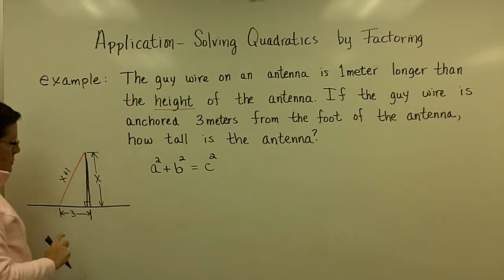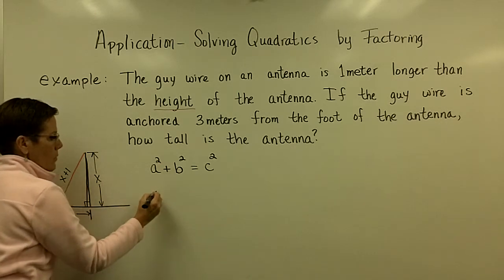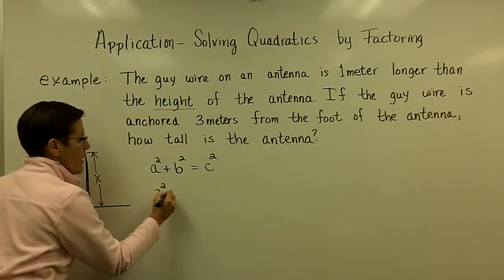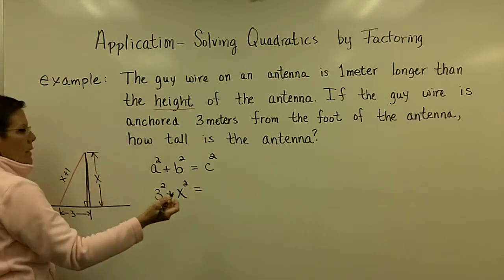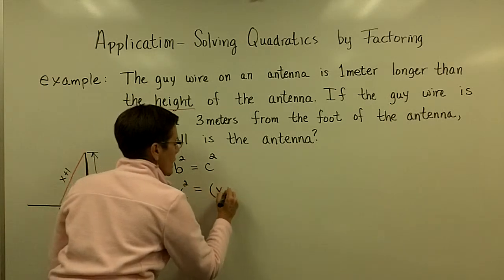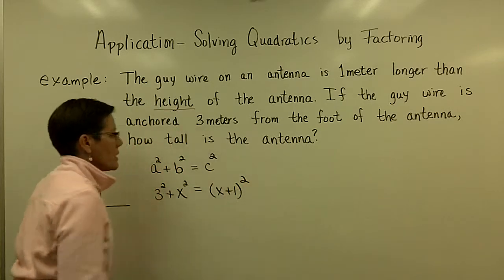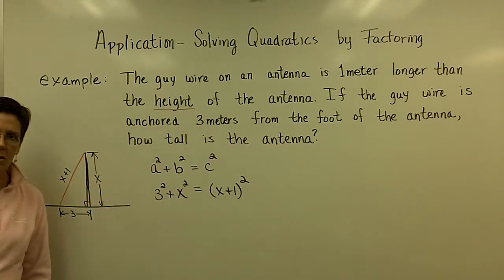So in this statement, my legs are the A's and the B values. It doesn't matter where I put them. I'm going to put a three in here for A and square that. And then for B, I'm going to put in X and square that. And on the right side, I'm going to put in the length of the hypotenuse, which for me is that X plus one, that quantity squared.